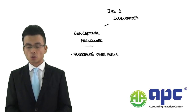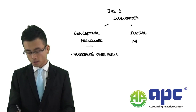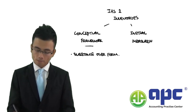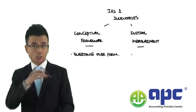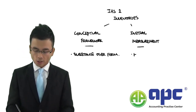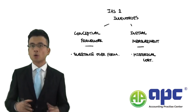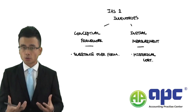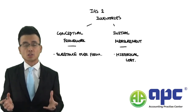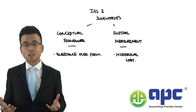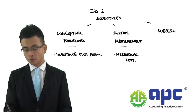After finishing the conceptual framework requirements in IAS-2, we look at the initial measurement — the values we are going to put onto the financial statement for inventories. We use the historical cost method. Then, if we bought inventories at the year start, we consider what the value would be at year end or at the reporting date — that is why we look at the subsequent measurement for those inventories.